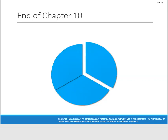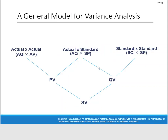That's the whole chapter on standards. I encourage you to keep coming back to this general model — the three-prong approach with actual actual on the left, actual standard in the middle, and standard standard on the right — and use it in your problem solving whether for materials, labor, or variable overhead. Let me know if you have any questions or need help on the chapter material. Good luck!